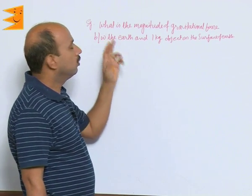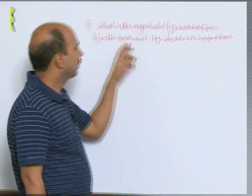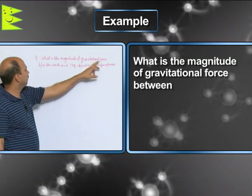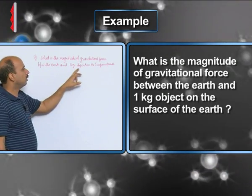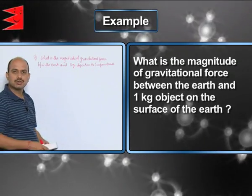Now, in this example, you have to calculate gravitational force. What is the magnitude of gravitational force between the Earth and a 1 kg object on the surface of Earth?